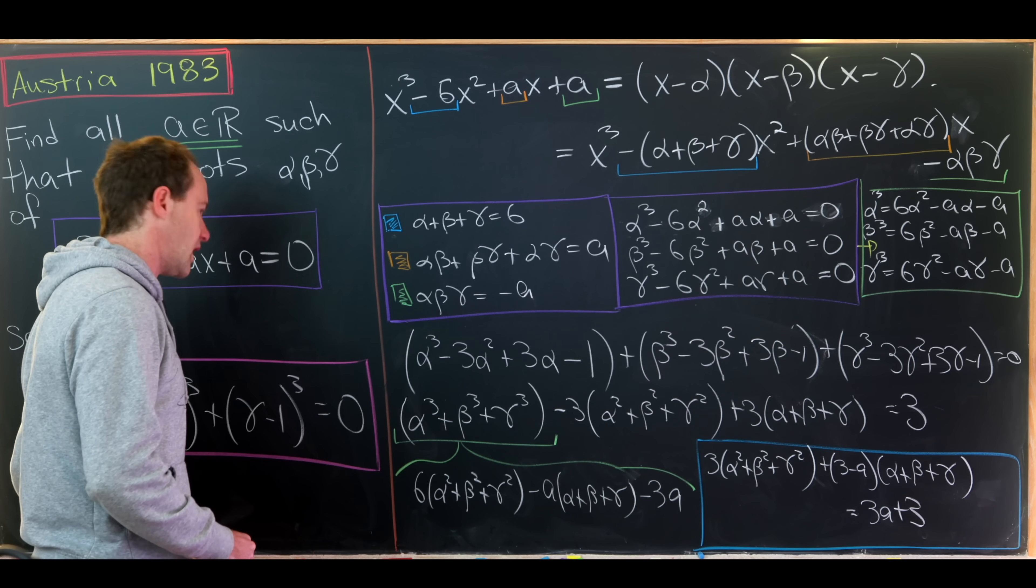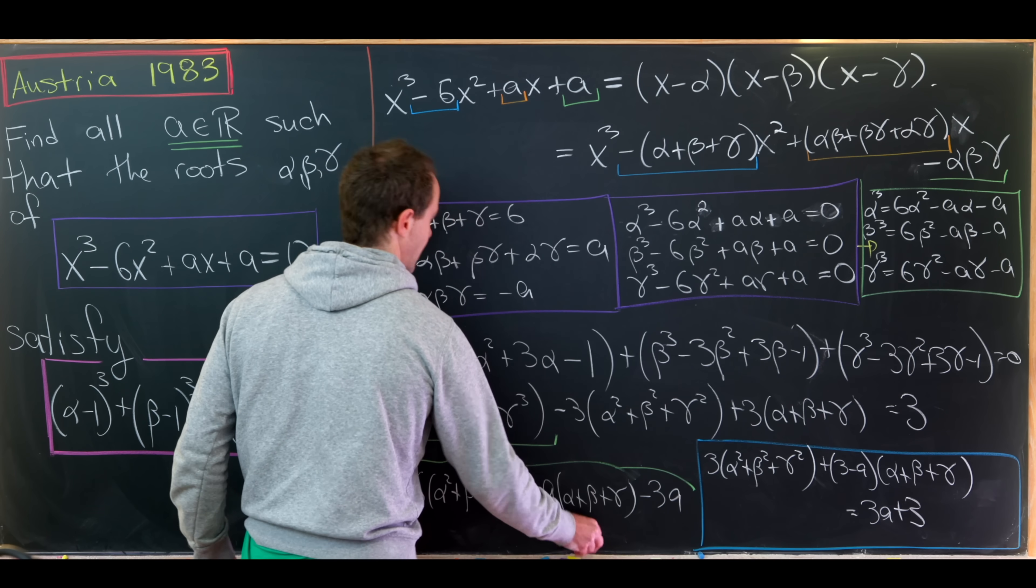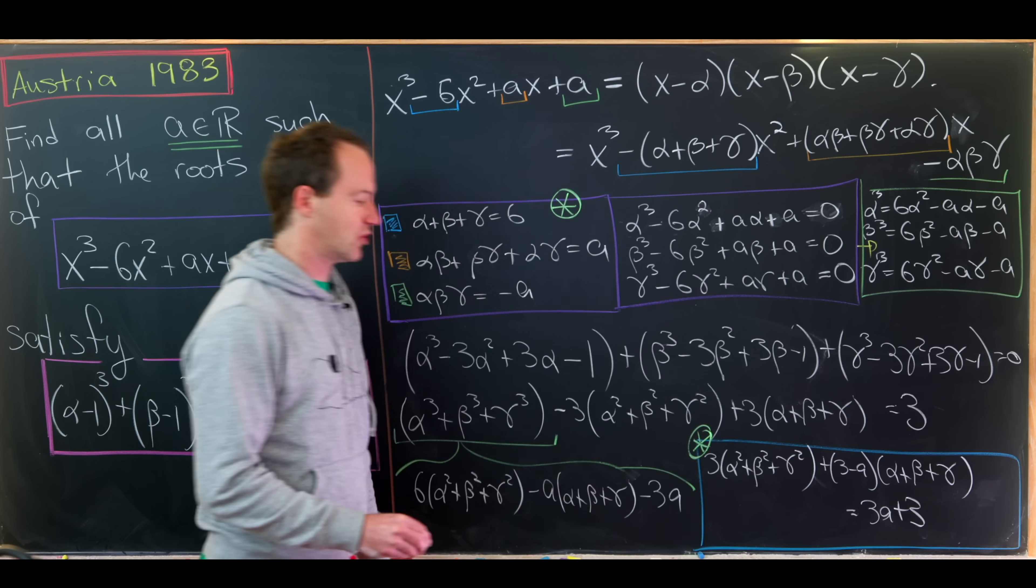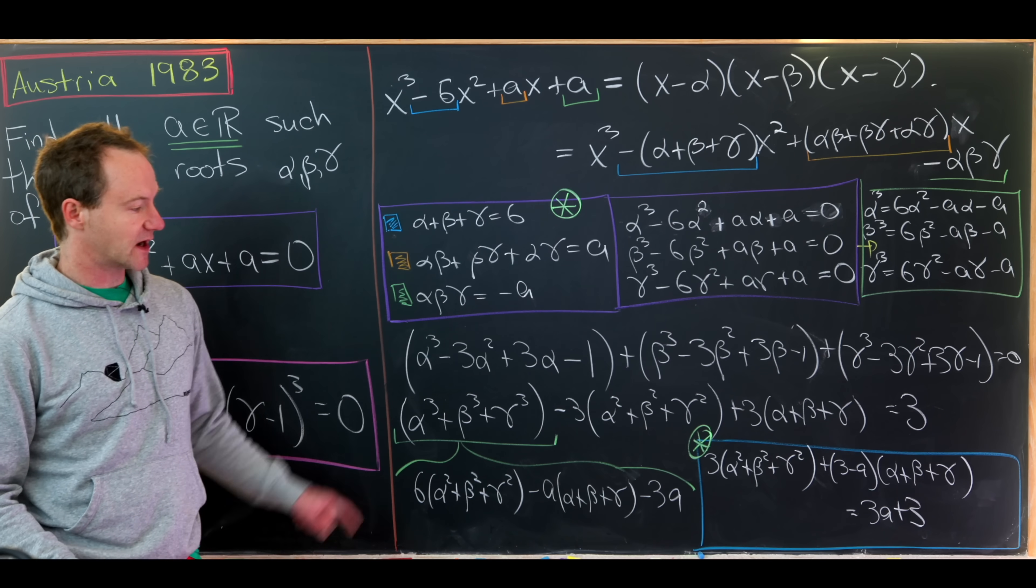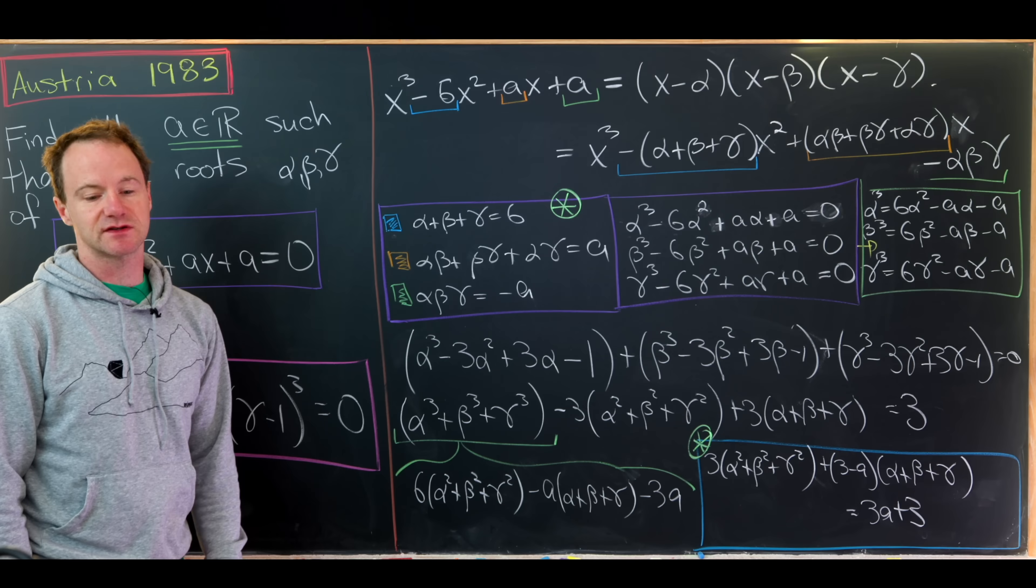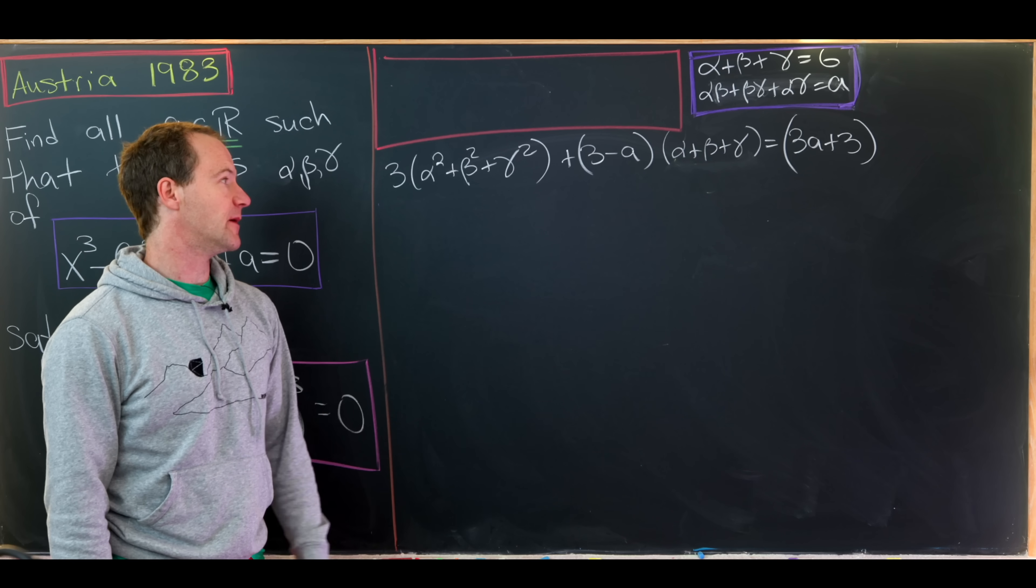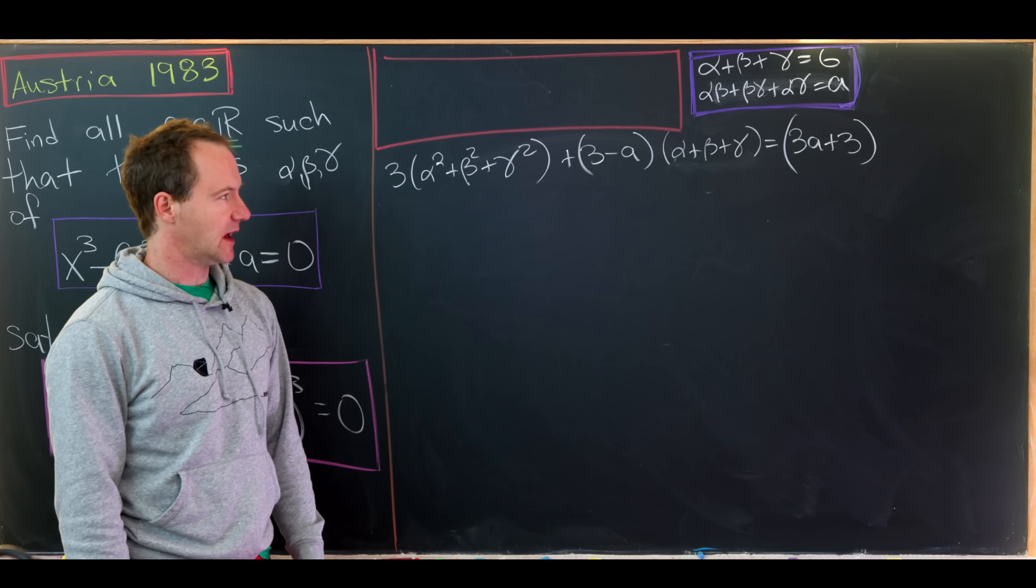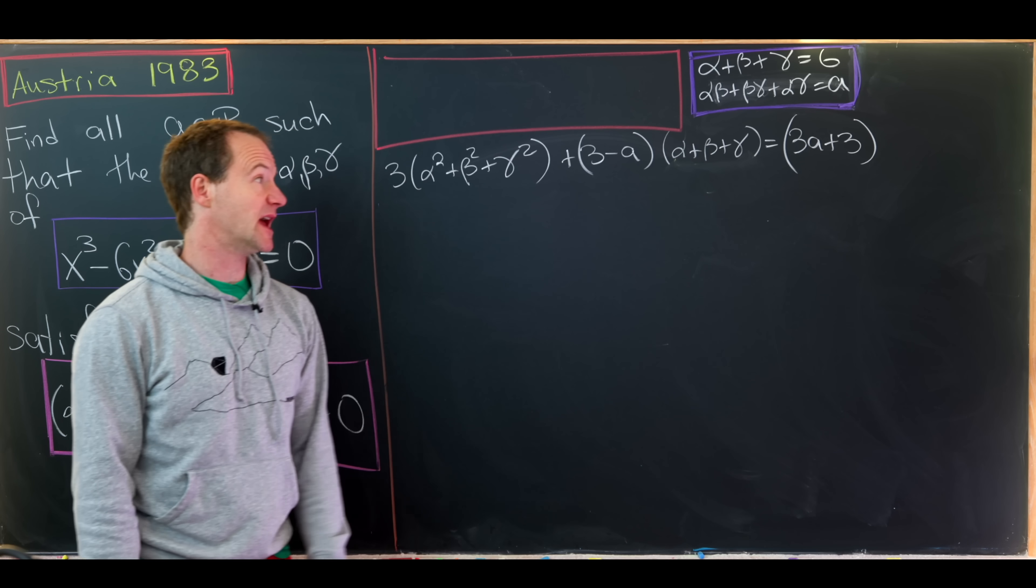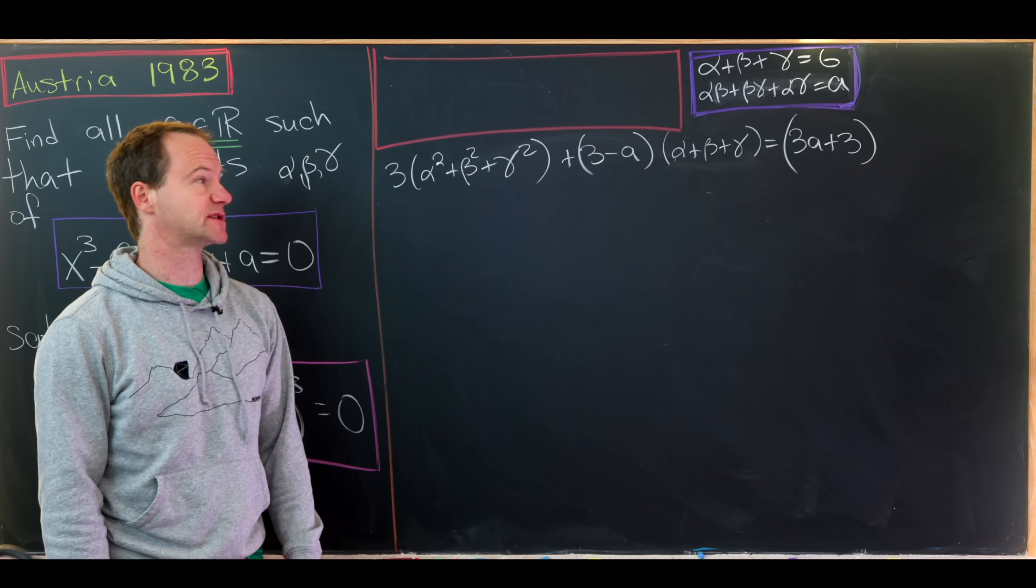So now in order to finish this thing off, we'll take advantage of this stuff right here, which is in this purple box, and this stuff right here, which is in this blue box. So let's bring those to the top and we'll do our final calculations. On the previous board, we forged the following equation involving alpha, beta, gamma, and a. We've got 3 times the sum of the squares plus 3 minus a times the sum alpha, beta, and gamma equals 3a plus 3.